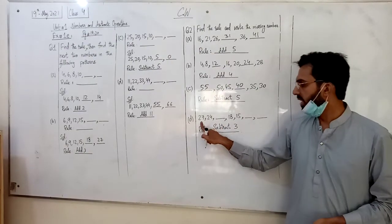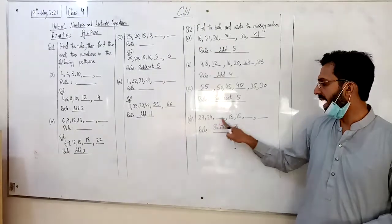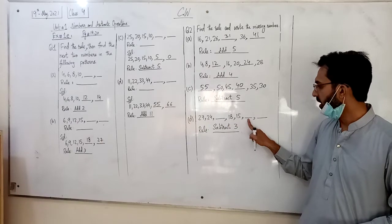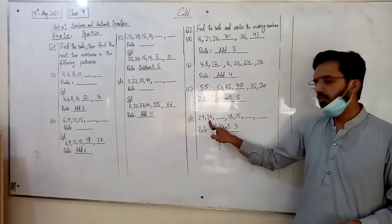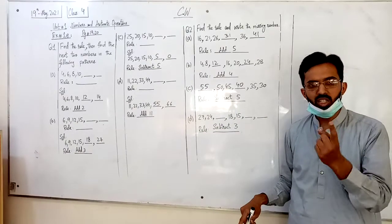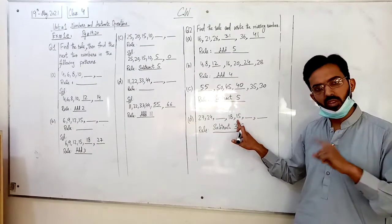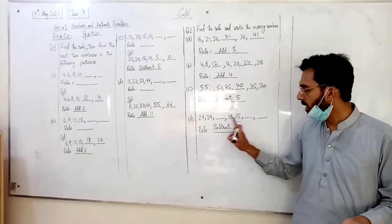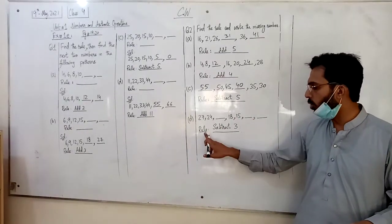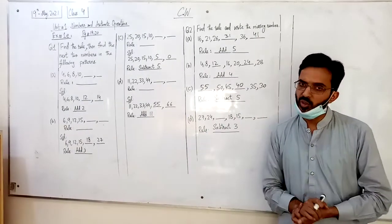अब है D part: 27, 24, dash, 18, 15, dash, dash. 27 के बाद 24 कैसे आया होगा? जी हां, minus 3 करने से. और 18 के से 15 कैसे आया होगा? 18 के बाद 3 minus करने से.